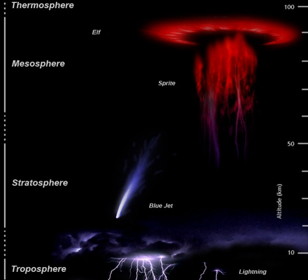Sprites are large-scale electrical discharges which occur high above a thunderstorm cloud, or cumulonimbus, giving rise to a quite varied range of visual shapes. They are triggered by the discharges of positive lightning between the thundercloud and the ground. The phenomena were named after the mischievous sprite (e.g., Shakespeare's Ariel or Puck), and is also an acronym for Stratospheric/Mesospheric Perturbations Resulting from Intense Thunderstorm Electrification. They normally are colored reddish-orange or greenish-blue, with hanging tendrils below and arcing branches above, and can be preceded by a reddish halo. They often occur in clusters, lying 50 km to 90 km above Earth's surface, and have been held responsible for otherwise unexplained accidents involving high-altitude vehicular operations above thunderstorms.